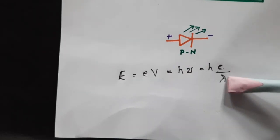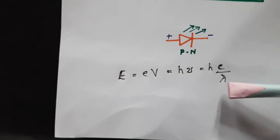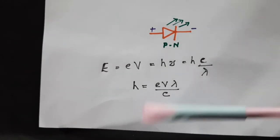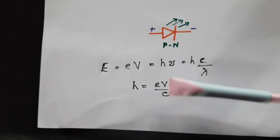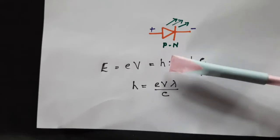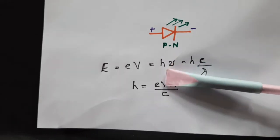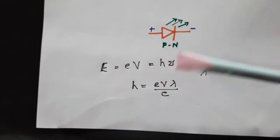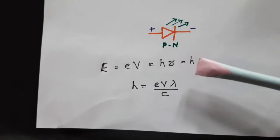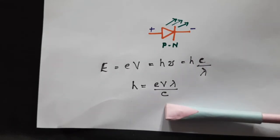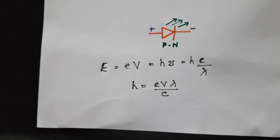H nu can also be written as H C by lambda. From this relation, we can rewrite the expression for Planck's constant H. H is equal to EV lambda by C. Here, E is the electronic charge, V is the applied voltage or voltage across the LED when it lifts up, and lambda is the wavelength of the emitted light and C is, of course, velocity of light in vacuum.